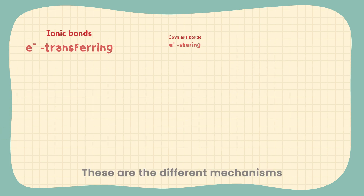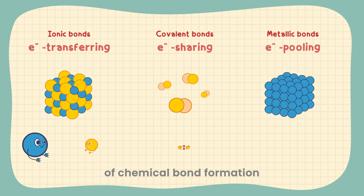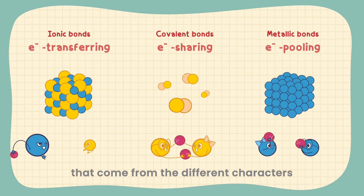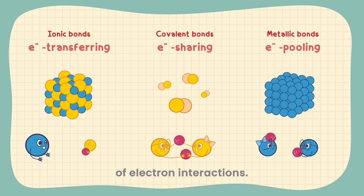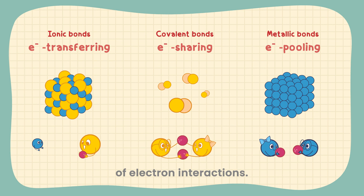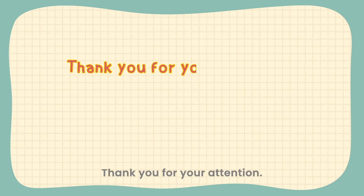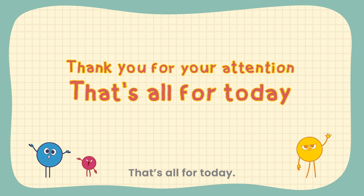These are the different mechanisms of chemical bond formation that come from the different characters of electron interactions. Thank you for your attention. That's all for today.